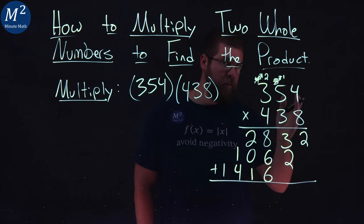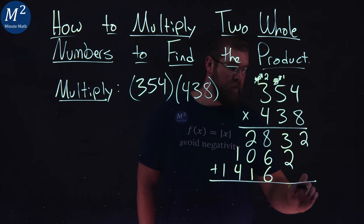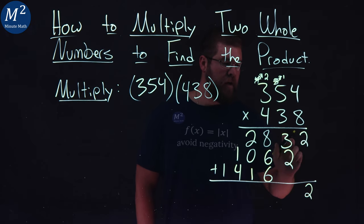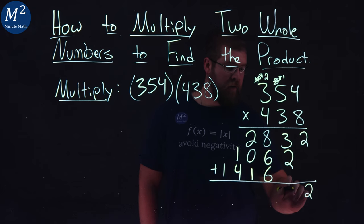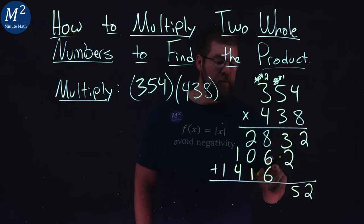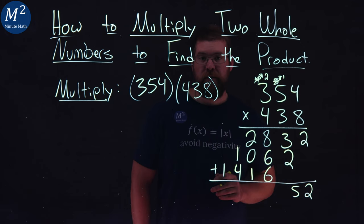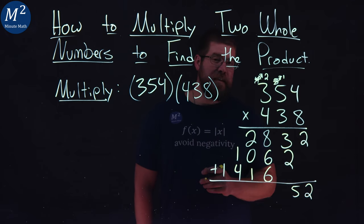Now we have to add them all up, keeping our place values in line. We have 2 here at the end by itself. 3 plus 2 gives me 5. 8 plus 6 plus 6. Well, 6 plus 6 is 12, plus 8 is 20.